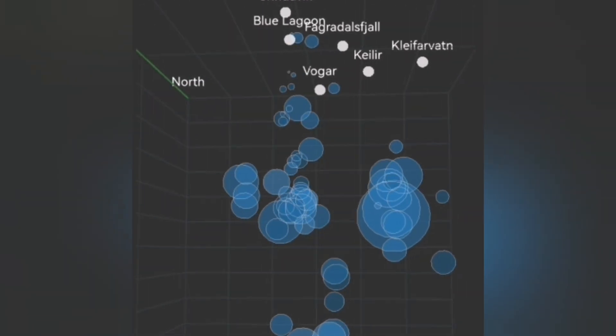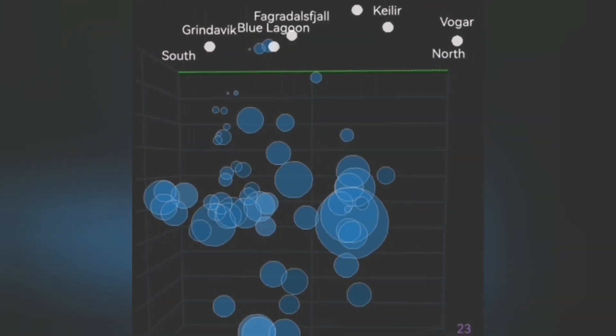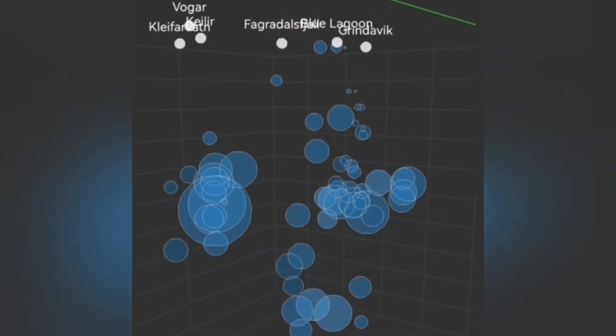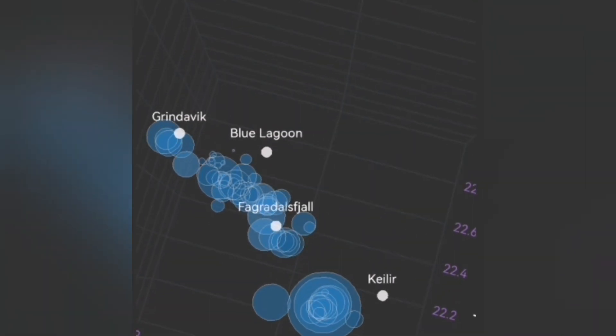Up to now, what we had at the depth of 5 kilometers was the fault lines transferring the movement from the Svartsengi toward the east. And that was the reason we had earthquakes at the Krýsuvík and Kleifarvatn area.